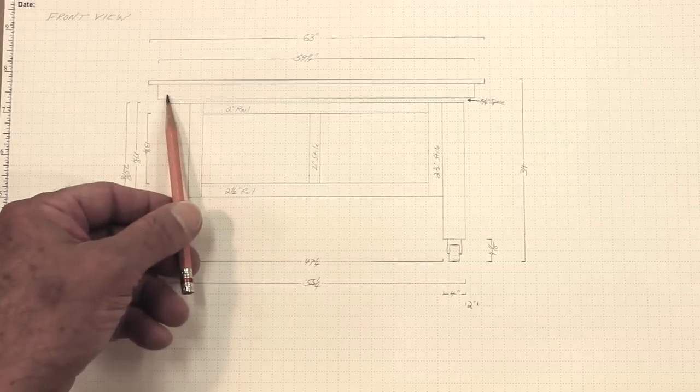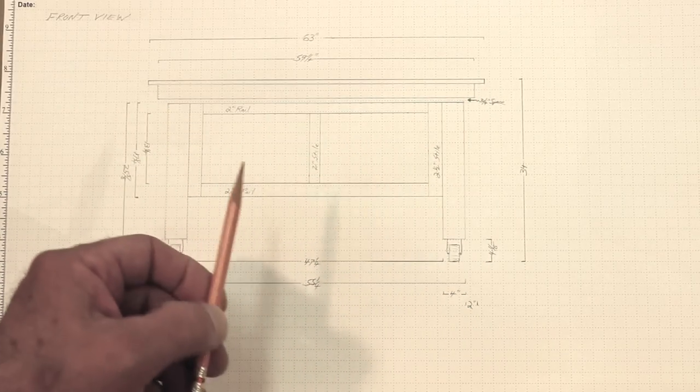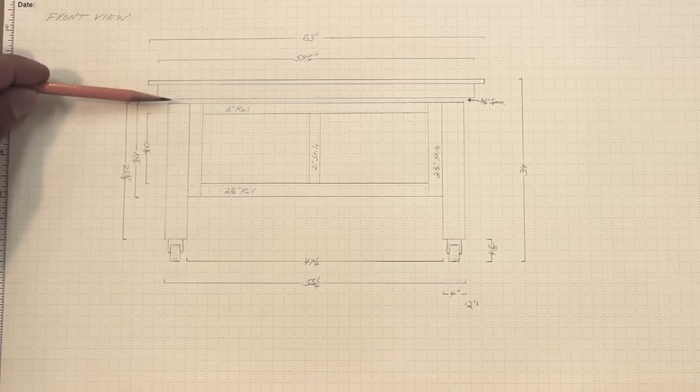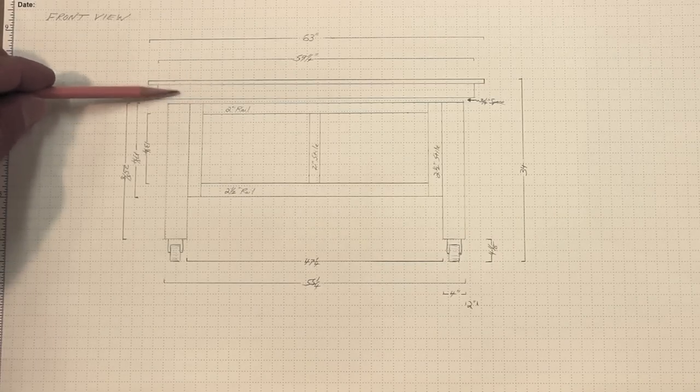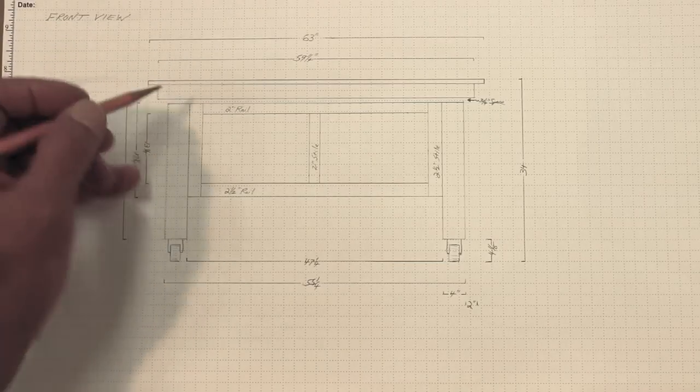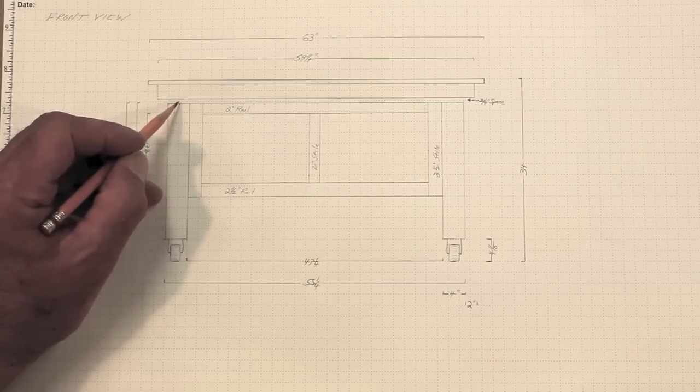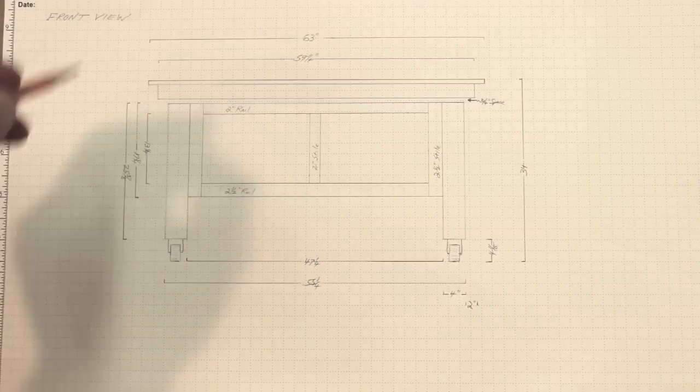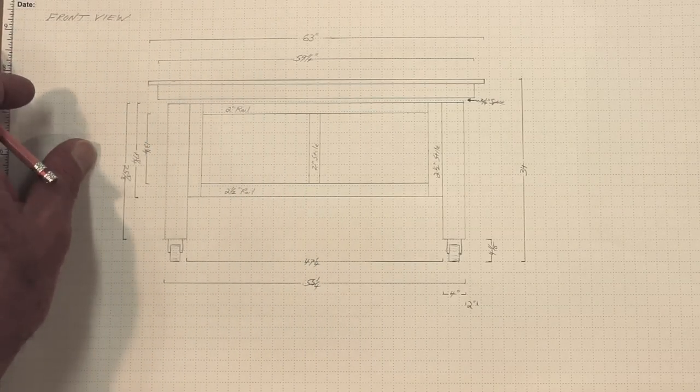Got the torsion box top with a slight overhang on either end. And you'll notice there's a space between the torsion box top and the leg assembly. And the reason is, because I'm going to try to put some kind of leveling mechanism in on the four corners. It's going to be a little bit of an experiment. We'll see how that goes.